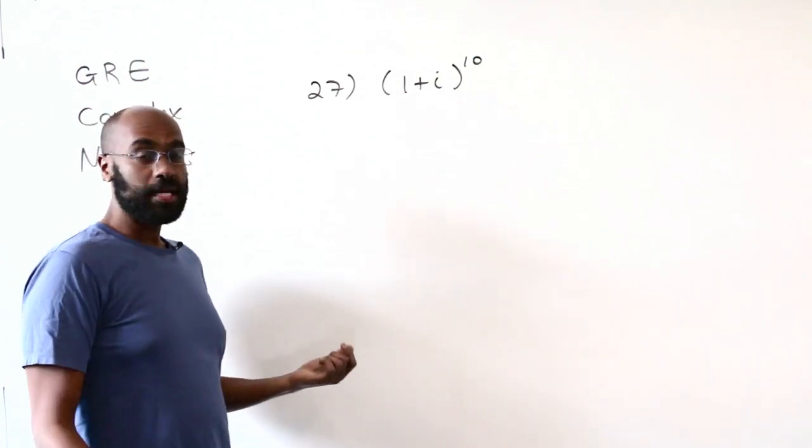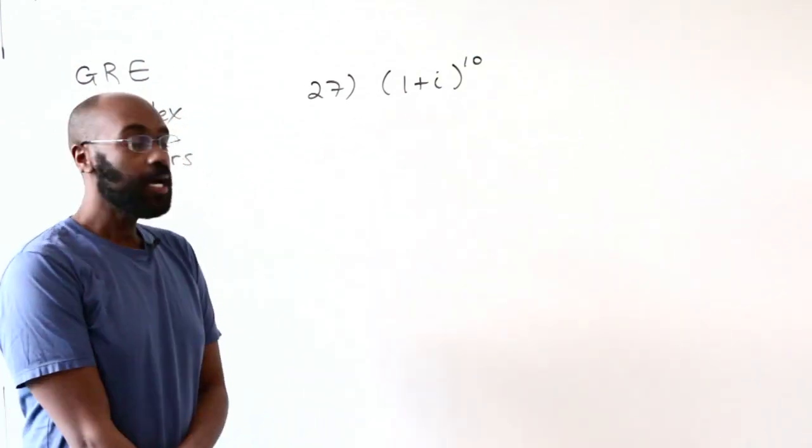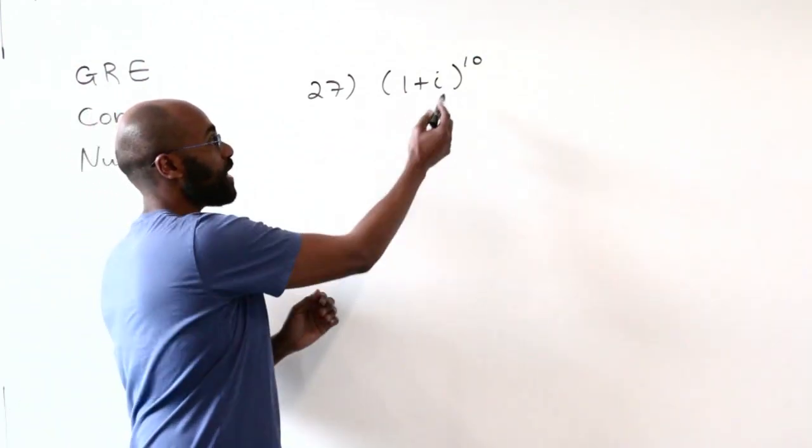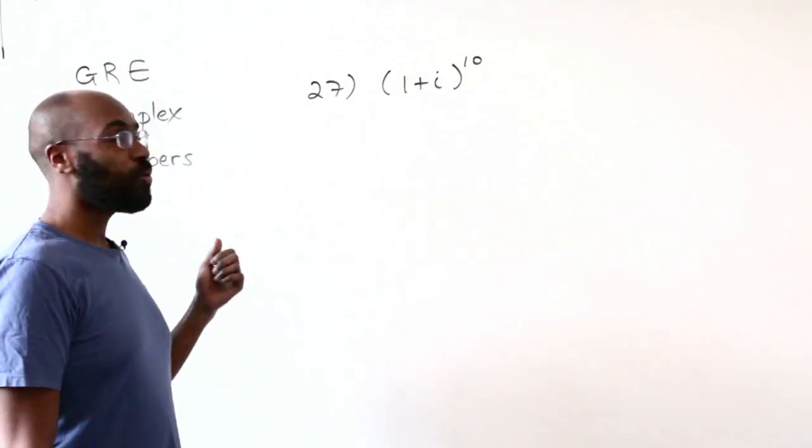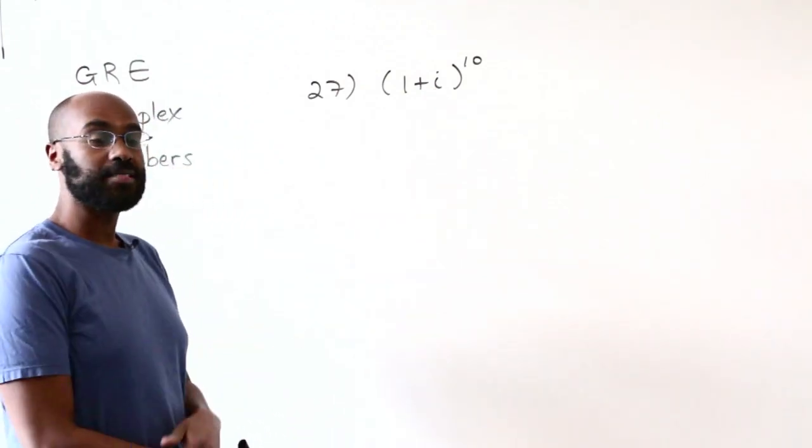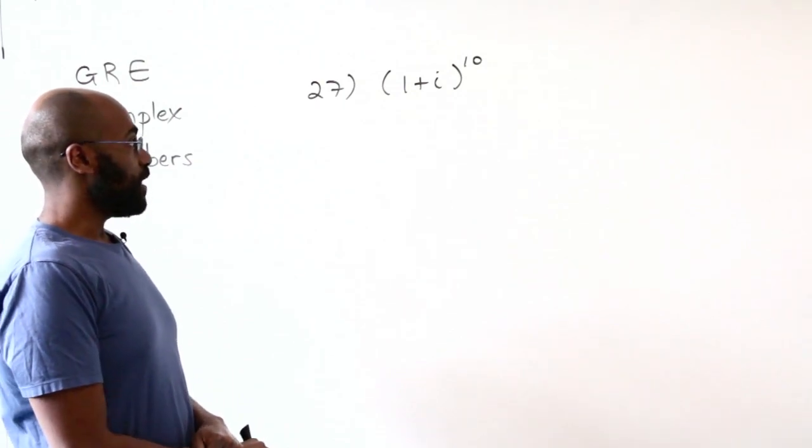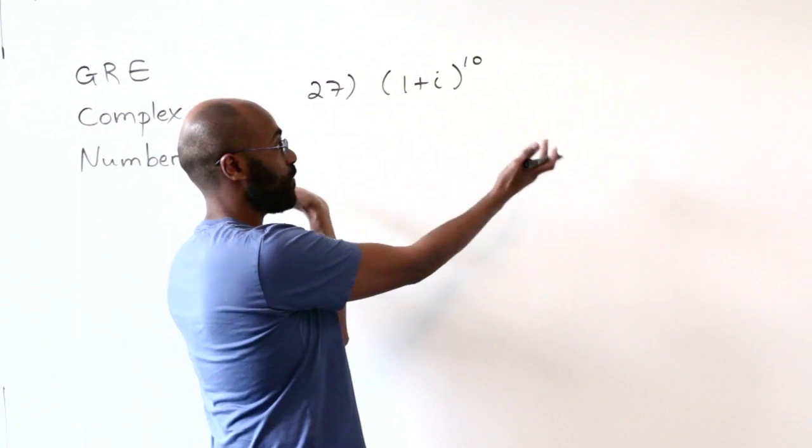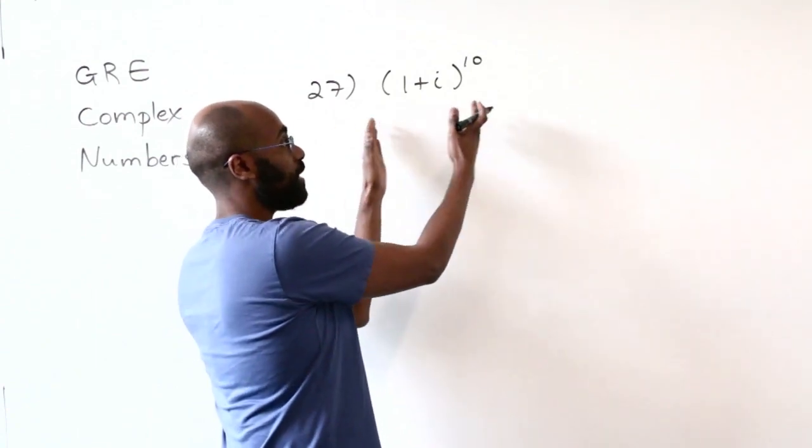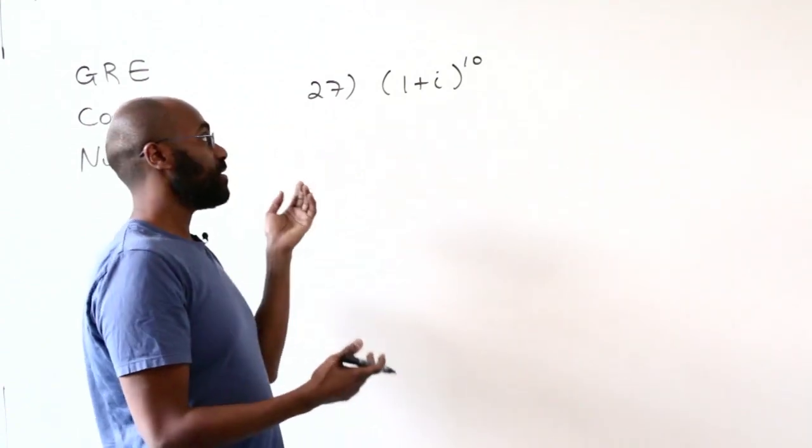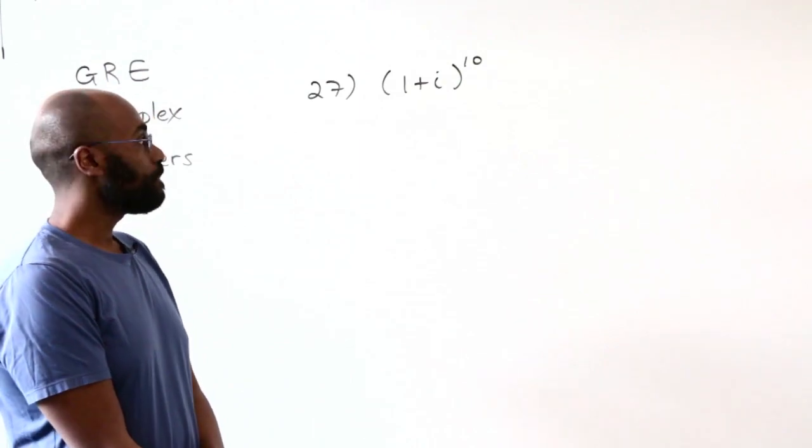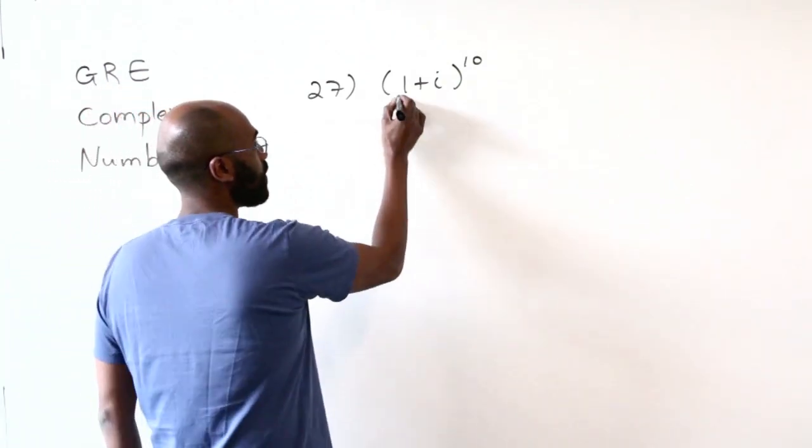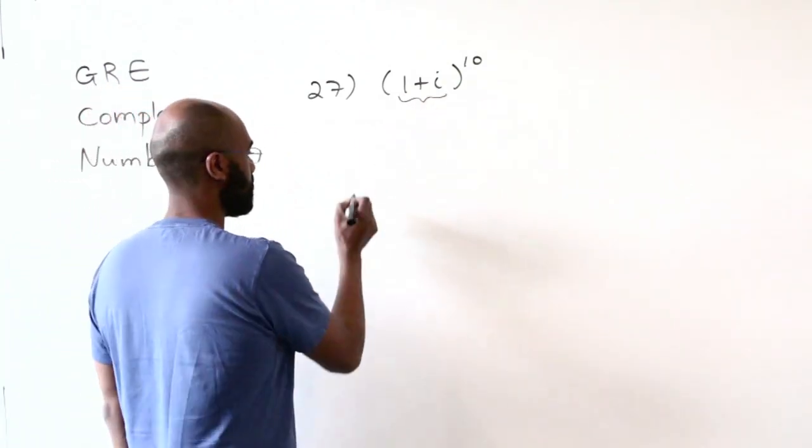The second problem I want to consider is this problem right over here that asks you to compute 1 plus i to the 10th. And this is problem 27 on the current GRE math subject test practice book. We could expand this by using something like the binomial theorem or multiplying this out explicitly, but you can see this is going to get quite complicated. Instead, let's think about the polar form of this particular complex number.